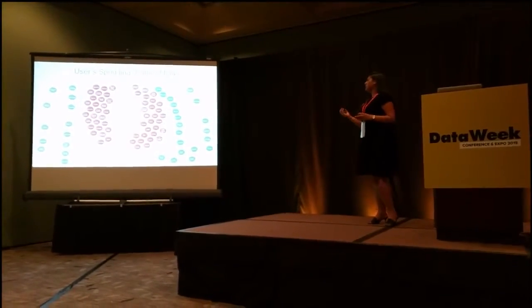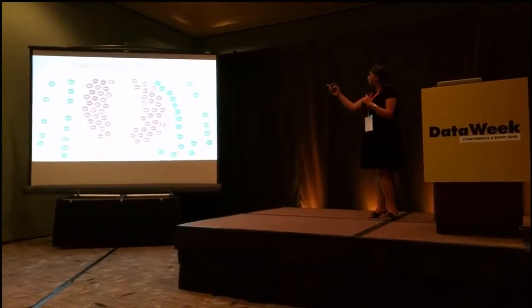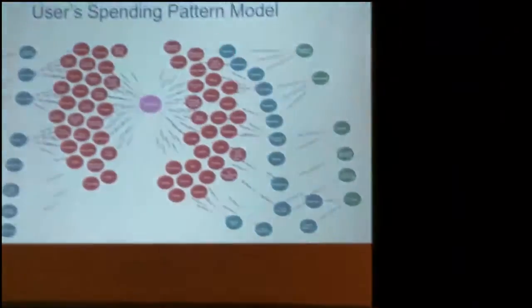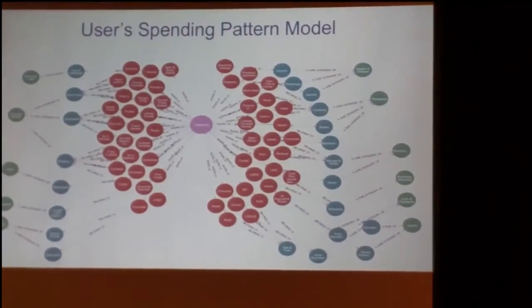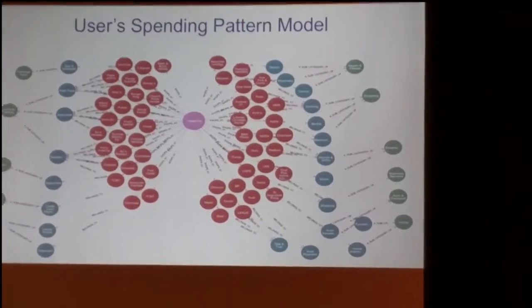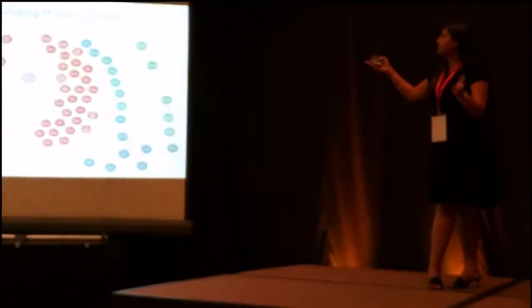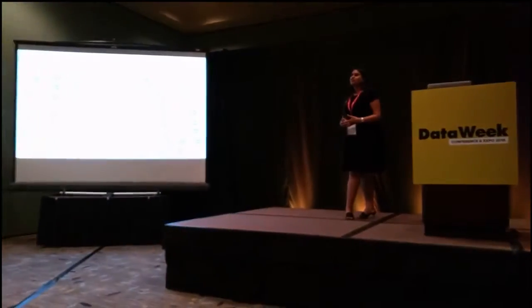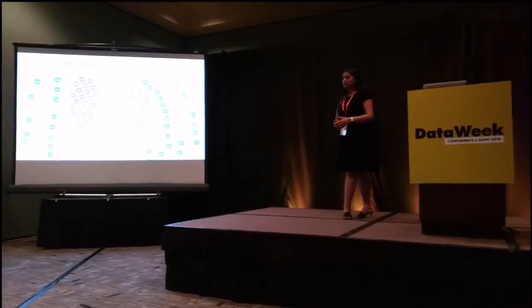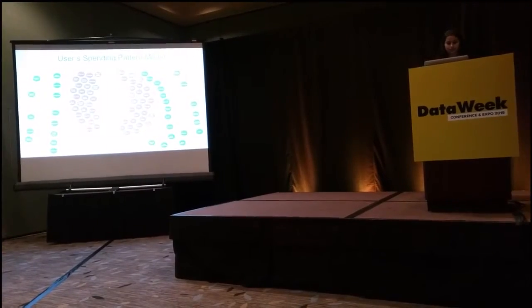The beauty of a graph model is that we can traverse in both directions — from a user to see which merchants they visit and map back to the parent category, or start from a parent category and drill down to the users. For example, with multiple user nodes we can identify which merchants are most frequently visited across all users, deriving a lot of useful insights.